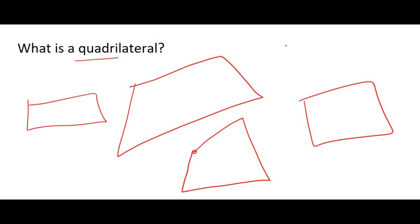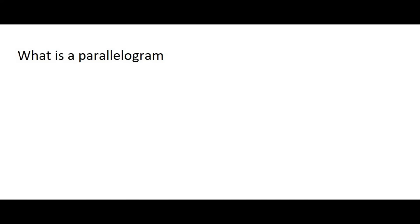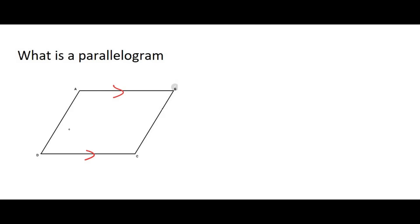In this lesson we're going to be looking at the most popular type, which is a parallelogram. Now what is a parallelogram? A parallelogram is a shape that has parallel sides. The opposite sides are parallel to each other — we show that with arrows. So a parallelogram has parallel sides, and it has two pairs.